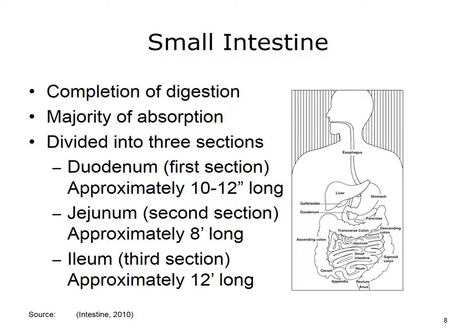After an hour or so, the chyme leaves the stomach and enters the small intestine, or small bowel. The small intestine is where digestion is completed and the majority of nutrient absorption occurs. The small intestine is divided into three sections: the duodenum, the jejunum, and the ileum.